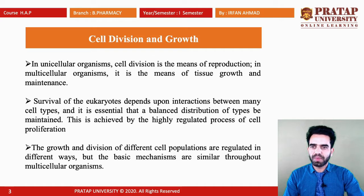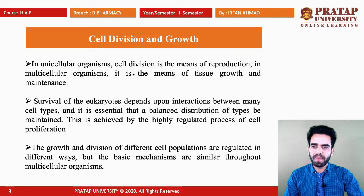In unicellular organisms, cell division is the means of reproduction — they divide because they have to reproduce and that is the only way. In multicellular organisms it is the means of tissue growth and maintenance. The growth of the tissues occurs because of cell division, while in unicellular organisms cell division results in reproduction.